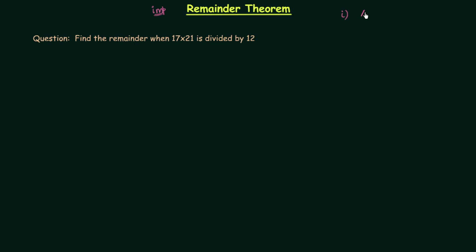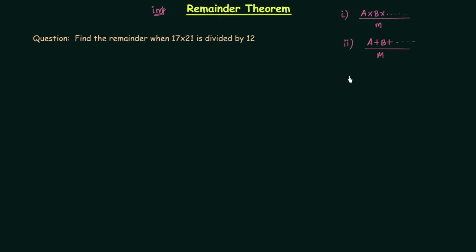The first case is when two or more numbers are multiplied together and then divided by another number. This type of division is not so simple, so we use remainder theorem to find out the remainder. The second case is when two or more numbers are added together and then divided by another number. Again we use remainder theorem to find the remainder.